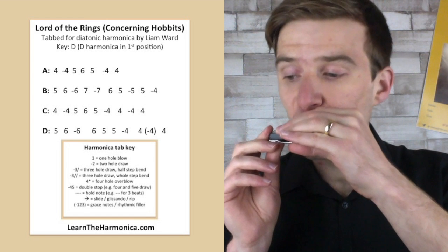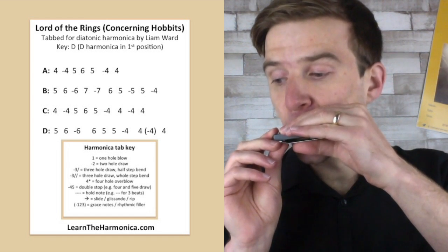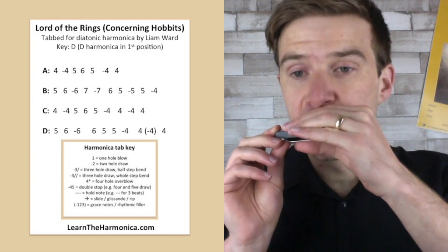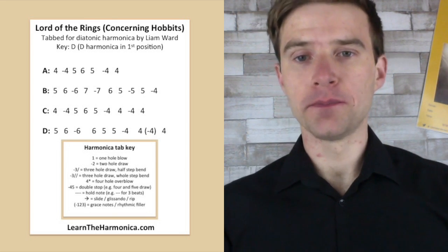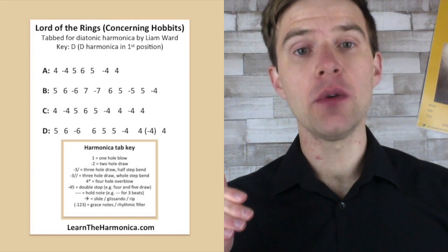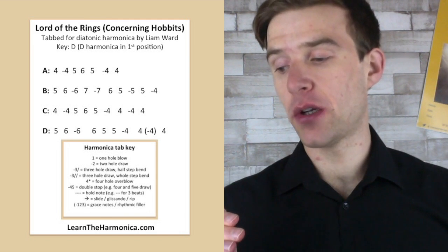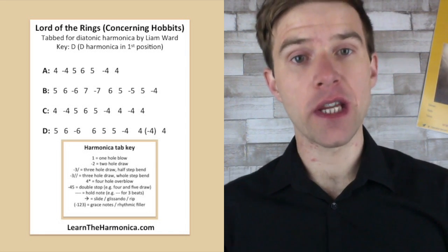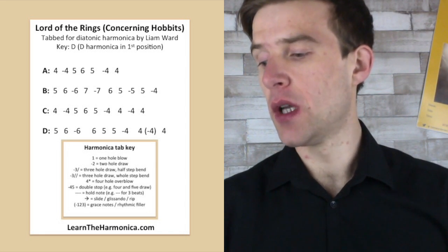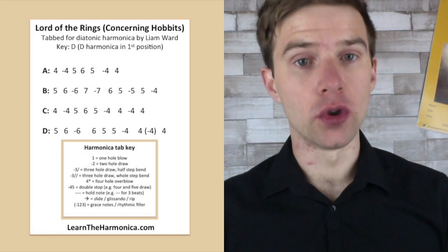And then line B. So the tab for line B, we've got five blow, six blow, six draw, and then seven blow, seven draw, six blow, five blow, five draw, five blow, four draw.